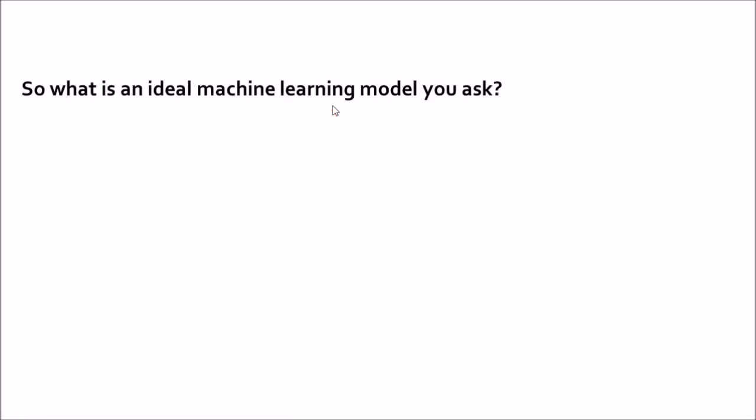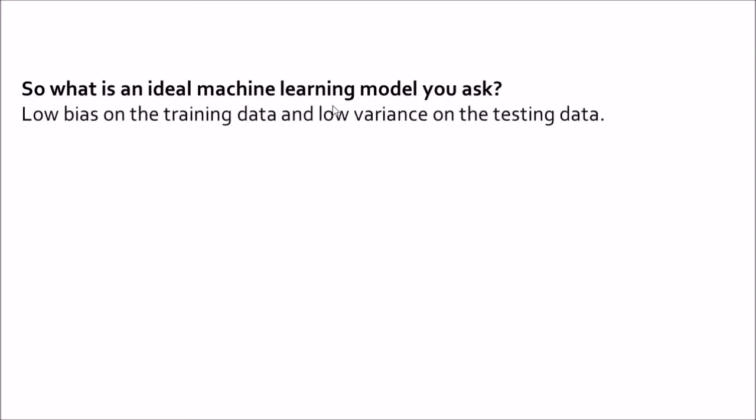So what is an ideal machine learning model? A model which has low bias on the training data and low variance on the testing data — one that makes the trade-off between bias and variance so that neither is very high.